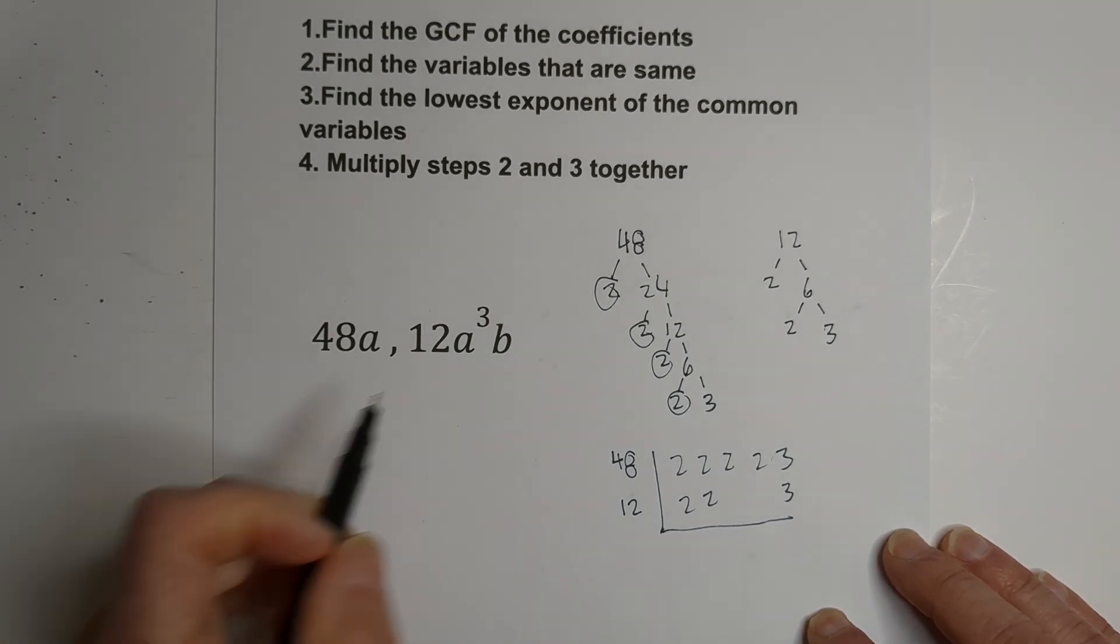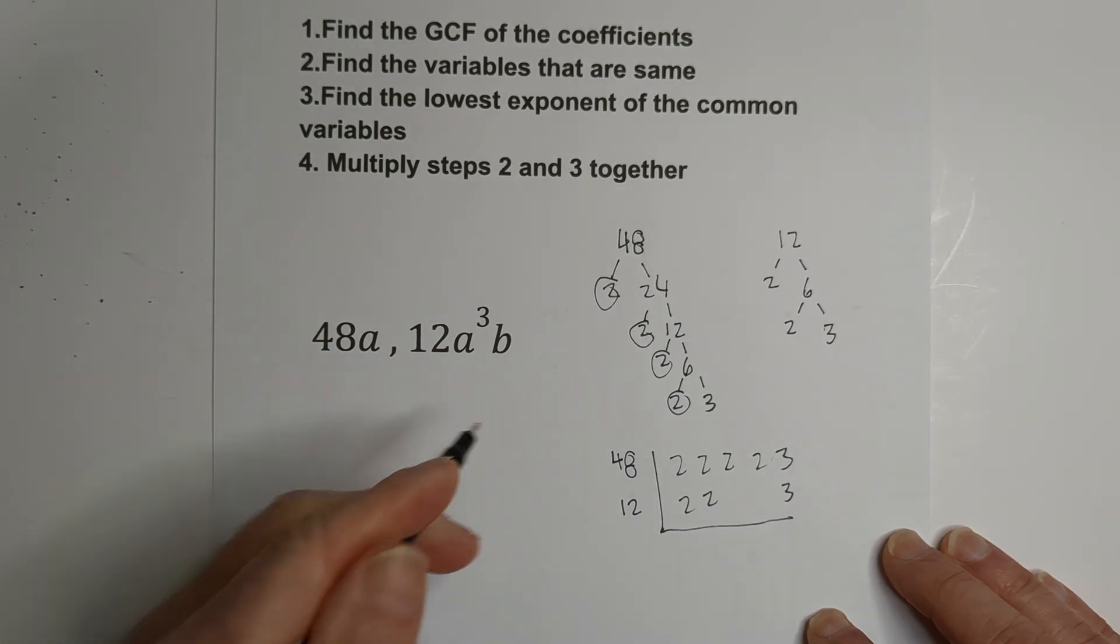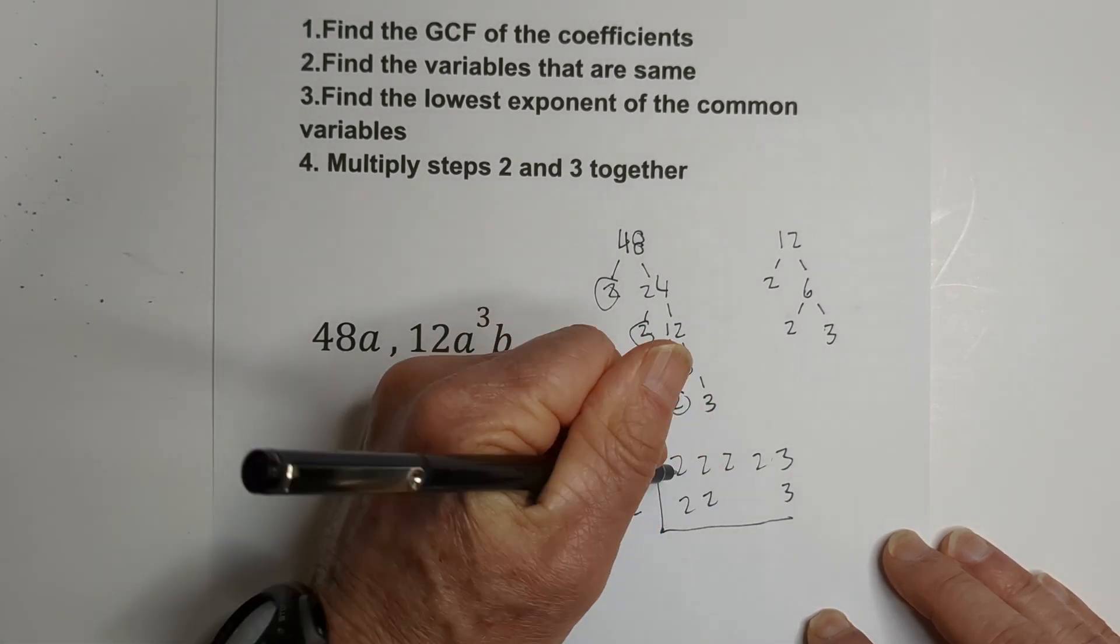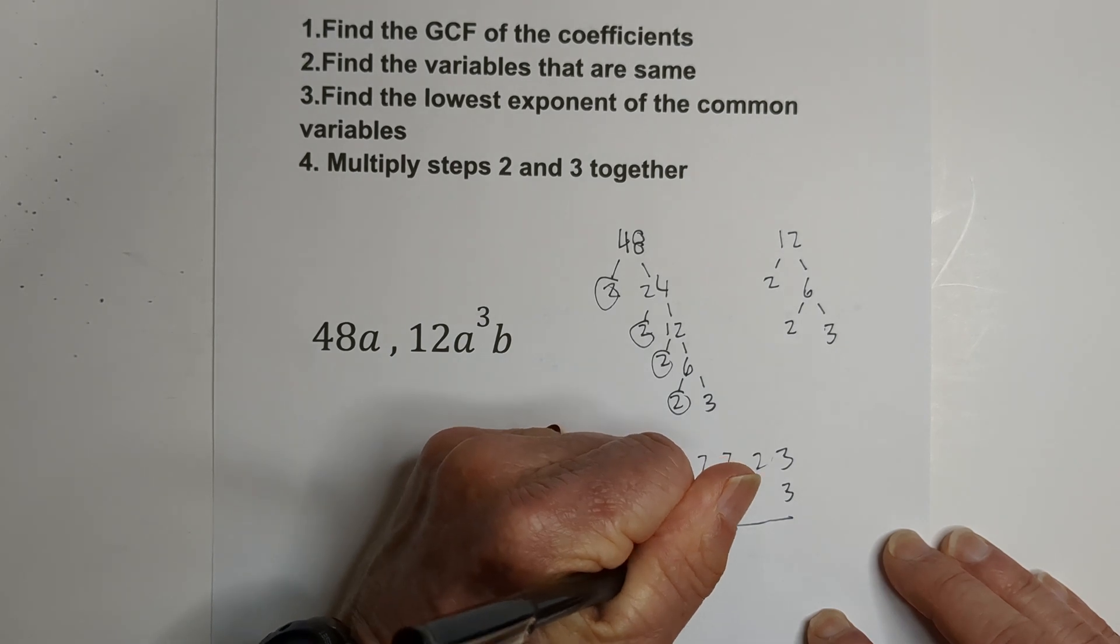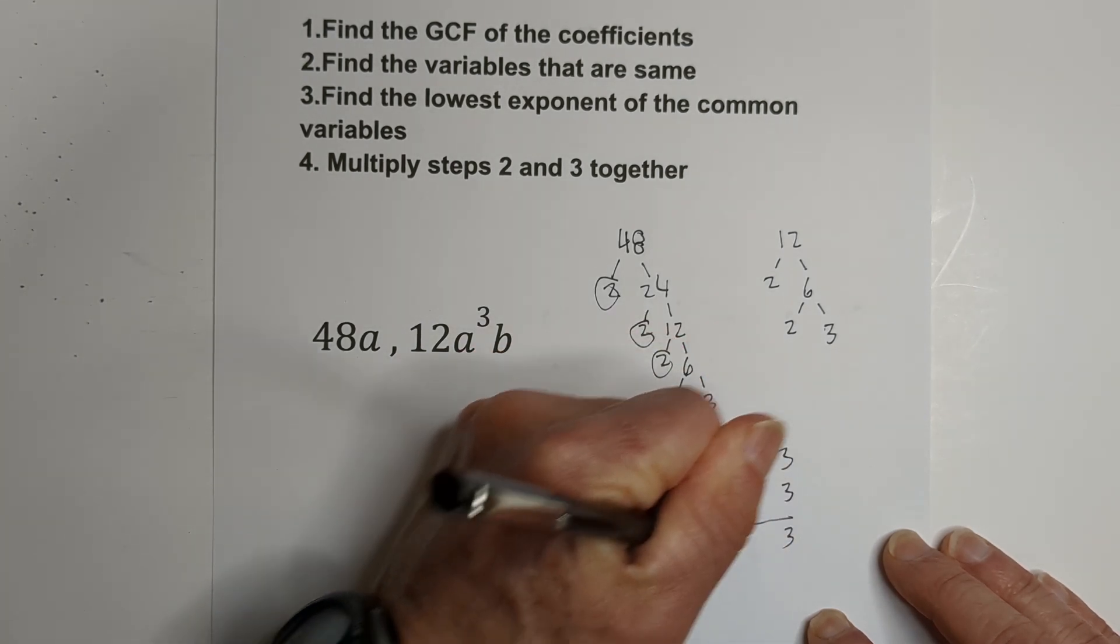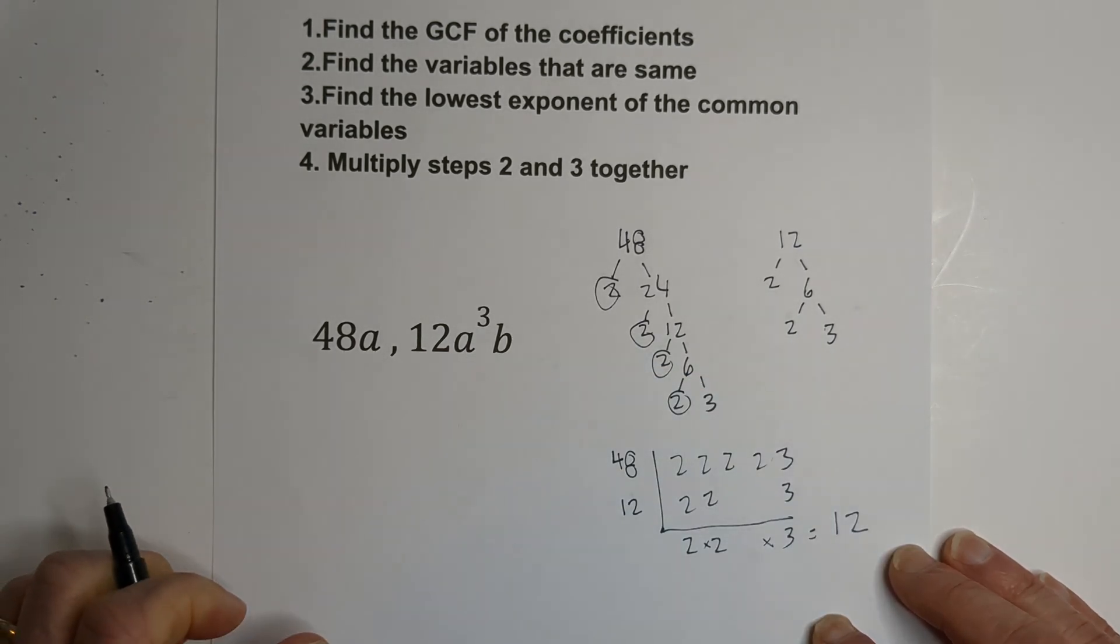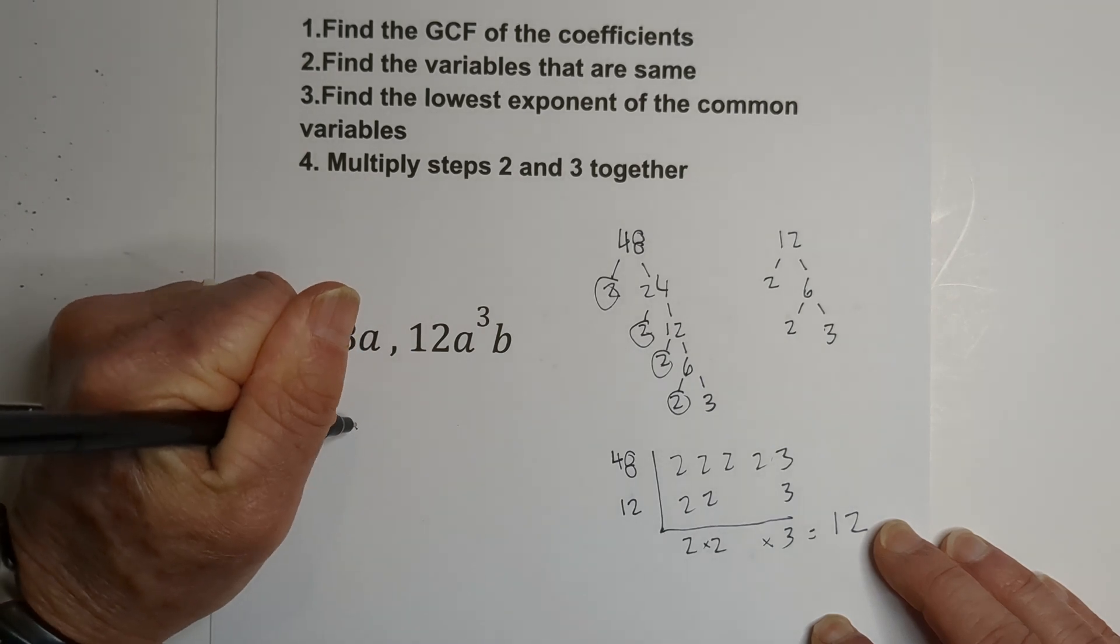And the rule is, for the greatest common factor, remember that's the largest number that goes into both of these without a remainder, is you have to have two of the same in the column. So we have a 2, a 2, and a 3. Then you just multiply them. 2 times 2 is 4, times 3 is 12. So we have step one completed. It is 12.